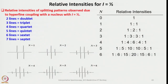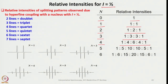Now let us look at the relative intensities for i equals half, i equals 1, and i equals 3/2 — we were using Pascal's triangles in NMR, and similarly we can look at relative intensities in hyperfine splitting. For N=0 we see one line; N=1 gives 2 lines; N=2 gives 3 lines with intensities 1:2:1; N=3 gives 4 lines with intensities 1:3:3:1; N=4 gives 5 lines with intensities 1:4:6:4:1, and it continues.